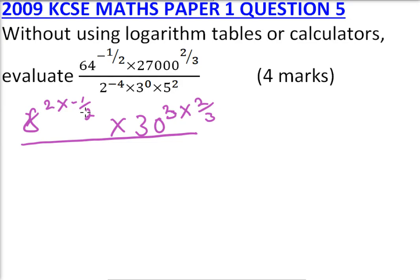Then you divide by, this is the same as 2 to the power minus 4, multiply, 3 to the power 0 is 1, multiply by 5, multiply by 5. This equals 2.